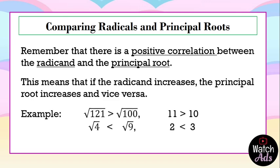Let's have examples. The square root of 121 is greater than the square root of 100, because 11 is greater than 10. The square root of 4 is less than the square root of 9, because 2 is less than 3. To identify which principal root is greater or less, you just have to concentrate on the numeric part — if it is greater, then it is greater than; if it is less, then it is less than.